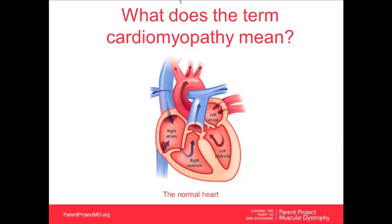So, what does the term cardiomyopathy mean? The picture in front of you demonstrates the normal heart. The blue blood comes back from the head and feet and goes into the right receiving chamber, known as the right atrium, then is pumped into the right pumping chamber — the right ventricle — and then pumped out into the lungs where it picks up oxygen. It returns oxygenated, goes into the left atrium, then the left ventricle, and then gets pumped out to the body.